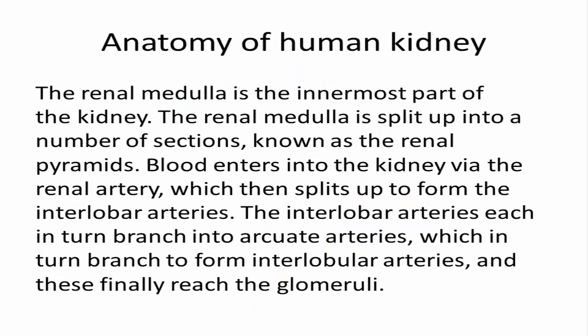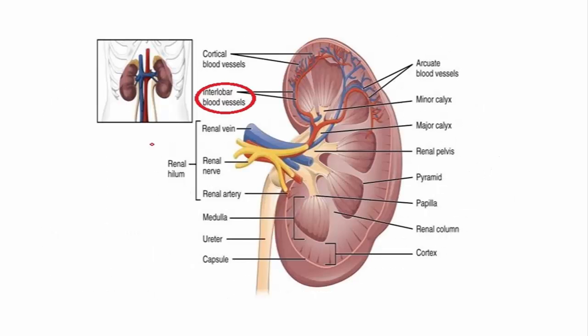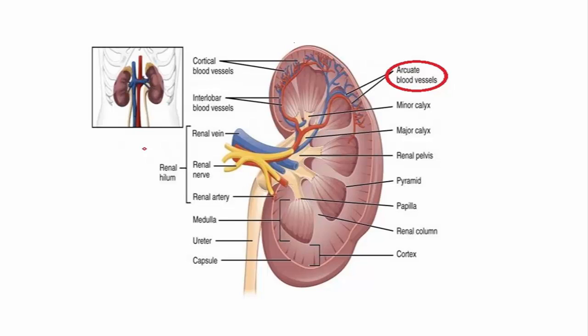Blood enters into the kidney via the renal artery, which then splits up to form the interlobar arteries. The interlobar arteries each in turn branch into arcuate arteries, which in turn branch to form interlobular arteries, and these finally reach the glomeruli.